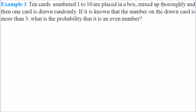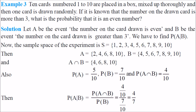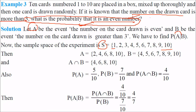10 cards numbered 1 to 10 are placed in a box and one card is drawn randomly. If it is known that the number on the drawn card is more than 3, what is the probability that it is an even number? Sample space S = {1, 2, ..., 10}. Let A be the event that the number is even, and B be the event that the number is greater than 3. We need to find P(A|B).